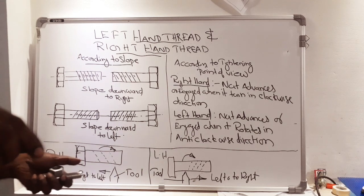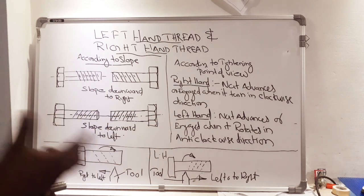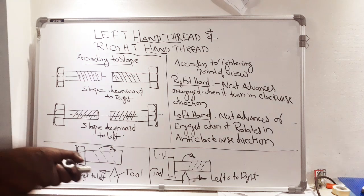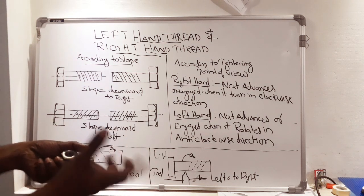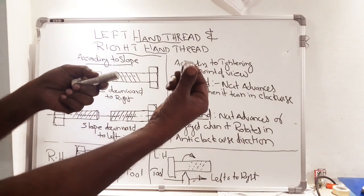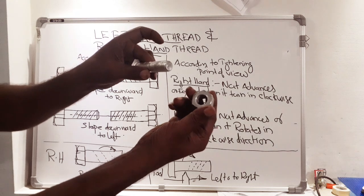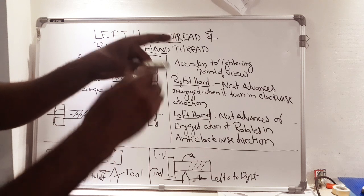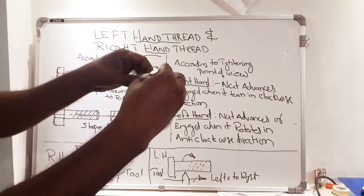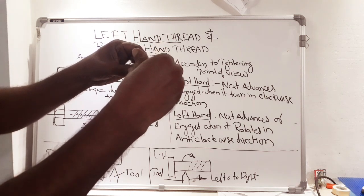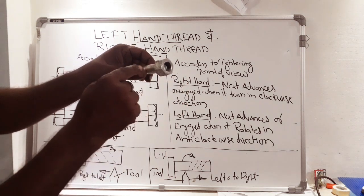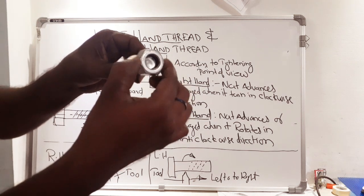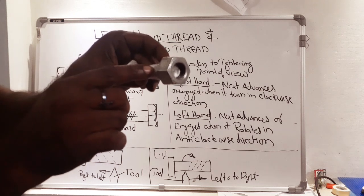How can we identify whether a thread is right-hand or left-hand? We can easily identify using the tightening method. Here, this is a nut and this is a bolt — both having threads, with threads provided internally and externally. When trying to join these two components, if the nut rotates in a clockwise direction and advances, then this thread is called right-hand.